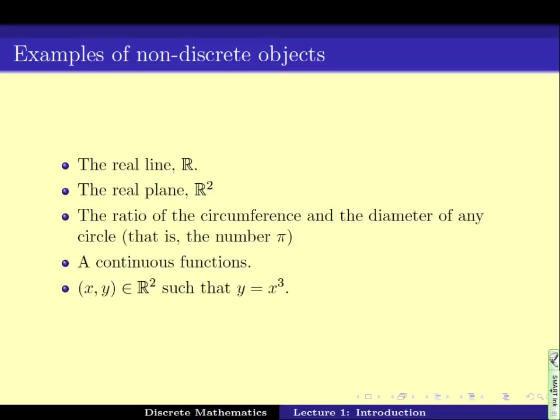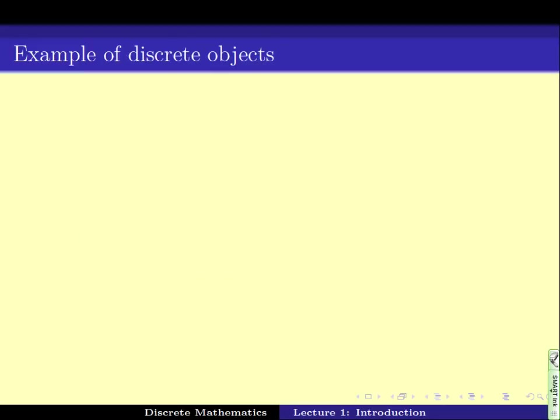Now, what are the discrete objects? Things that we see around us, objects like people, chairs, tables, balls, etc., they are discrete objects. The integers, that is 1, 2, 3, 4, 5, or 0, minus 1, minus 2, minus 3, minus 4, they are discrete objects, they are countable.